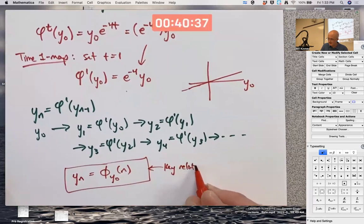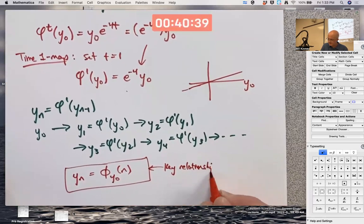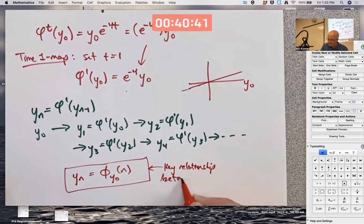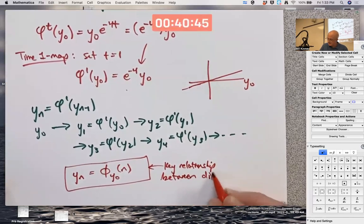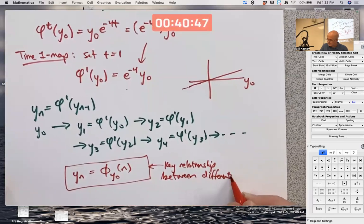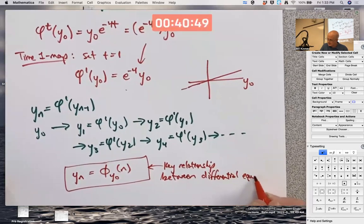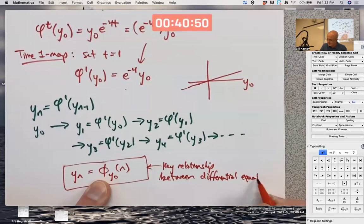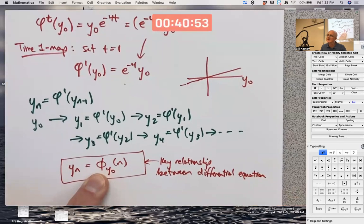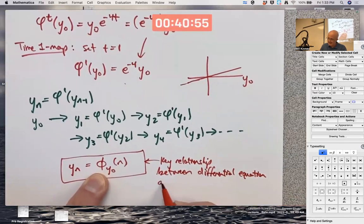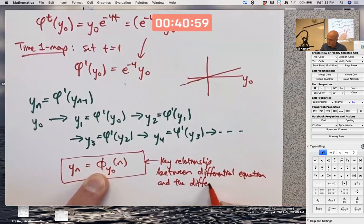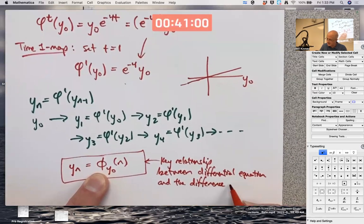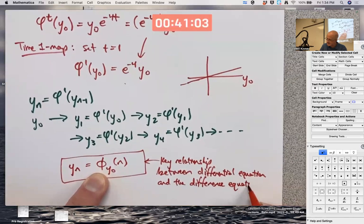Key relationship between the differential equation solution. Notice this is not a cursive phi. That's on purpose. And the difference equation. But it only works this way when your differential equation is autonomous.